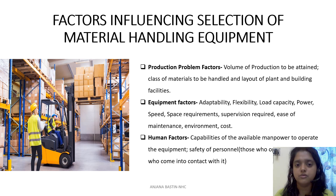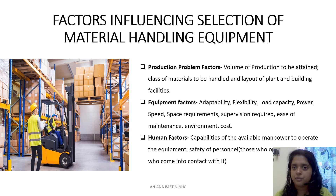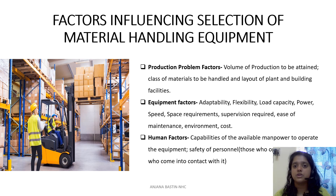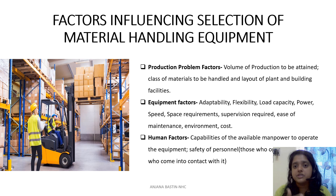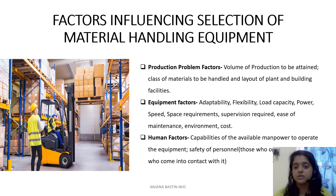What are the different factors involved in selection of material handling equipment? First, you need to understand what is the production problem and where exactly it is. You need to understand how much tons of production is happening, what is the volume of production, what are the different classes of materials to be handled, and how is the plant and building layout done.